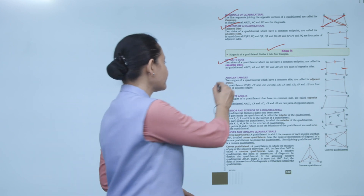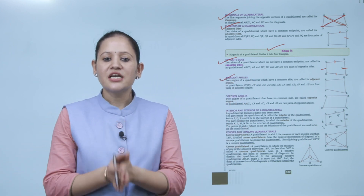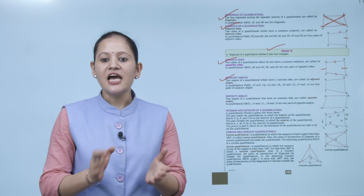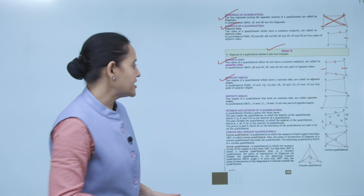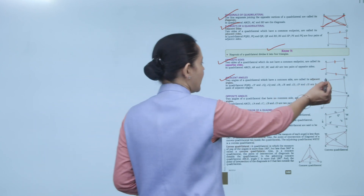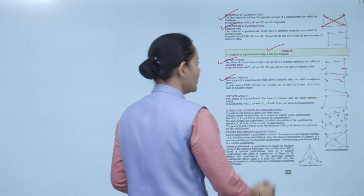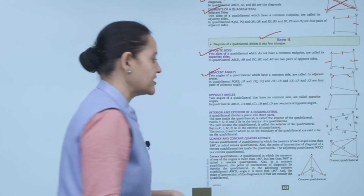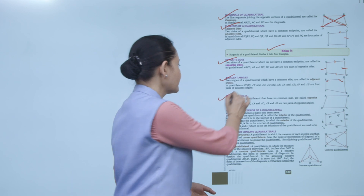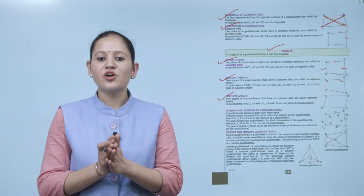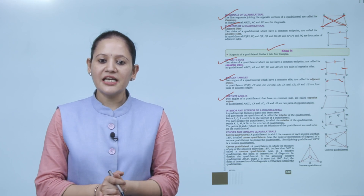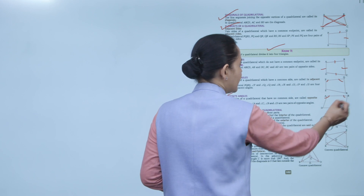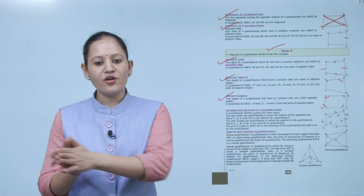Adjacent angles: two angles of a quadrilateral that share a common side are adjacent. In PQRS, the four pairs are: P and Q, Q and R, R and S, and S and P. Opposite angles: two angles with no common side. In ABCD, angles A and C are opposite, and angles B and D are opposite.